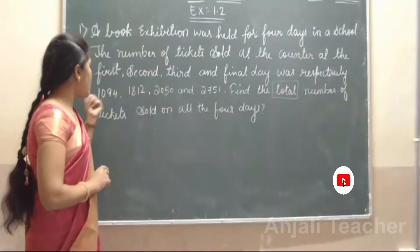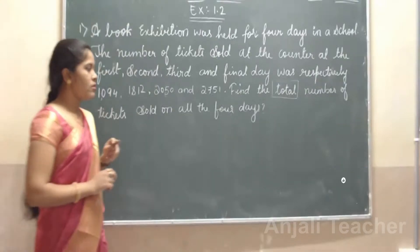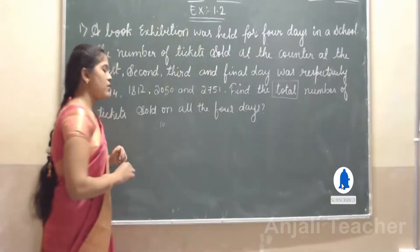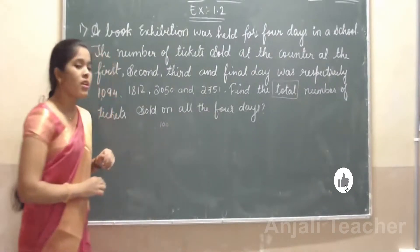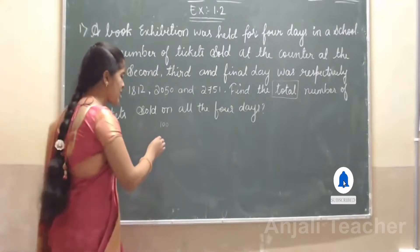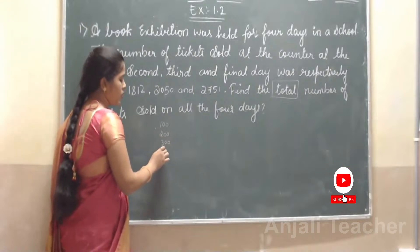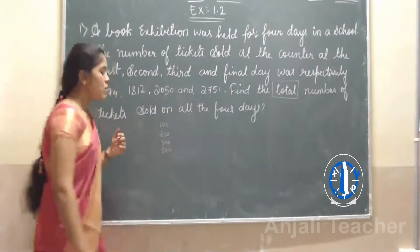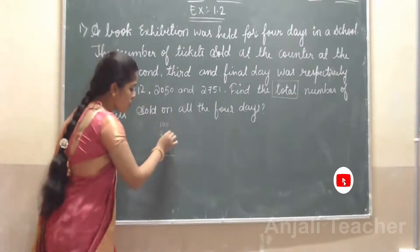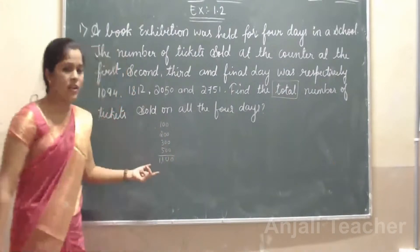Because we want the total, for example: I have 100 rupees on the first day. My mother gave 100 rupees on the first day, 200 on the second day, 300 on the third day, and 100 on the fourth day. So the total amount I have is 1,100 rupees.